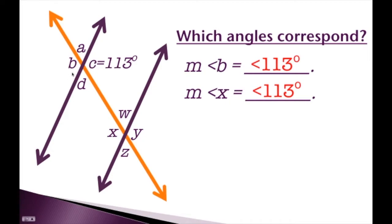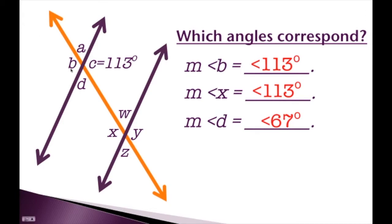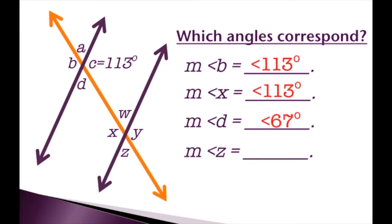Angle B is our bottom left angle here and angle X is our bottom left angle on the other side, so they are corresponding. What's the measure of angle Z? Angle D is a bottom right angle and angle Z is also a bottom right angle — they correspond. So if the measure of angle D is 67 degrees, then the measure of angle Z is also 67 degrees.